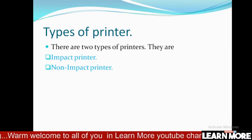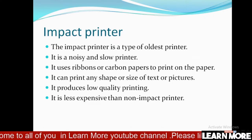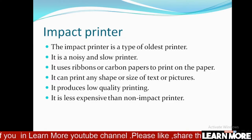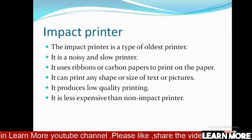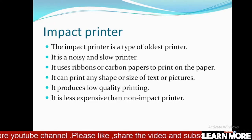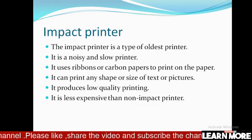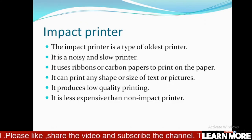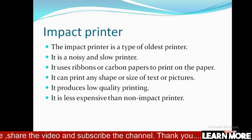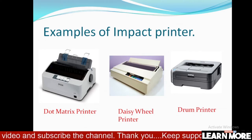There are generally two types of printer: the first one is impact printer and the next one is non-impact printer. The impact printer is a type of oldest printer. It is noisy and slow, and uses ribbons or carbon paper to print. It can print any shape or size of text or pictures, but it produces low quality printing and is less expensive than non-impact printer.